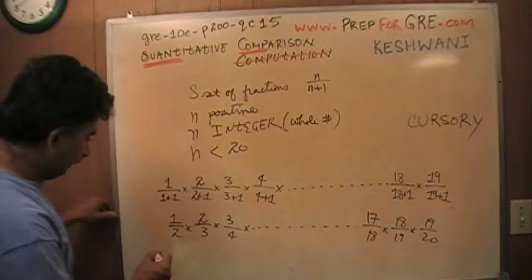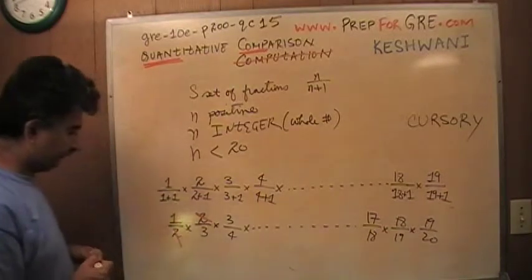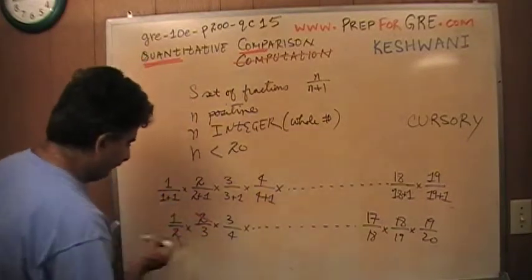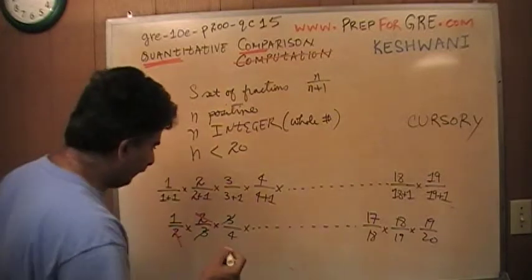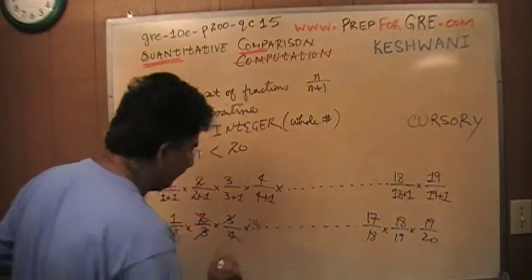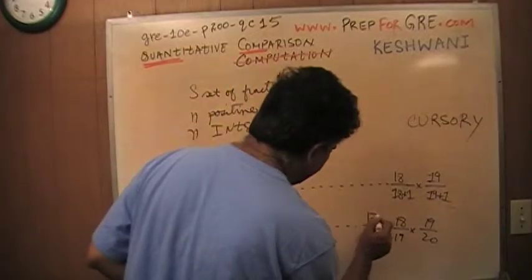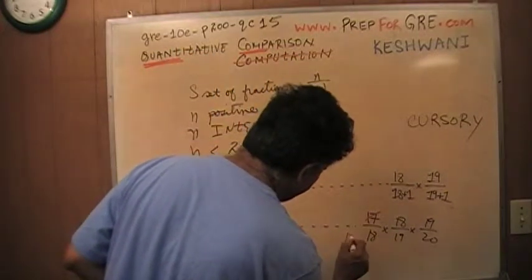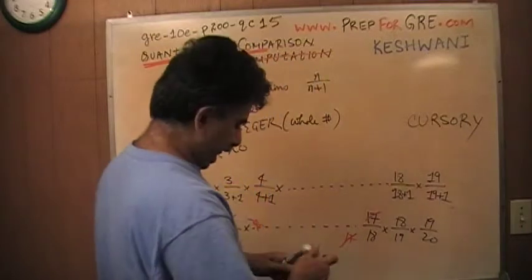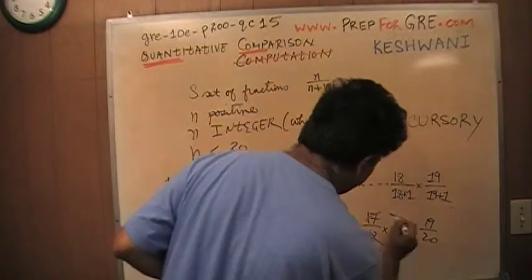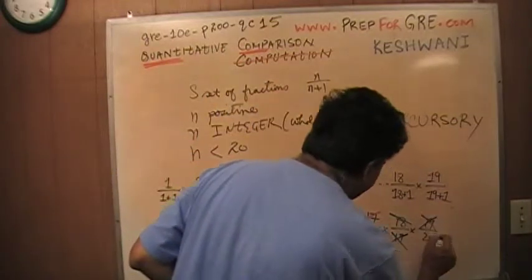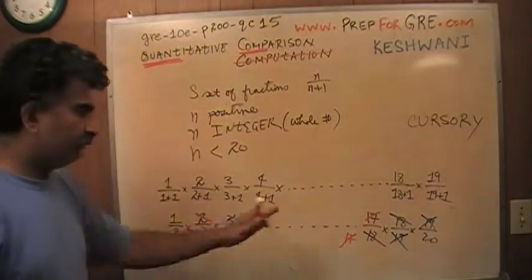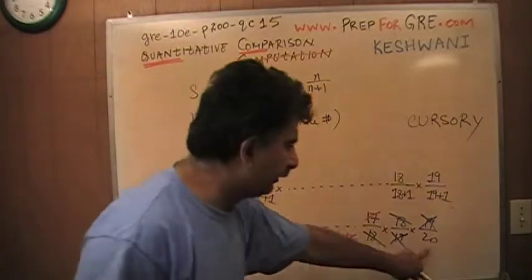This 2 is going to cancel out with that 2. This 3 is going to cancel out with this 3. And similarly the next 4 is going to cancel out with this 4 here and so on and so forth. Everything cancels out. This 17 is going to cancel out with this 17 here at the bottom. This 18 is going to cancel out. This 19 is going to go and basically the product of all of this is simply 1 over 20.